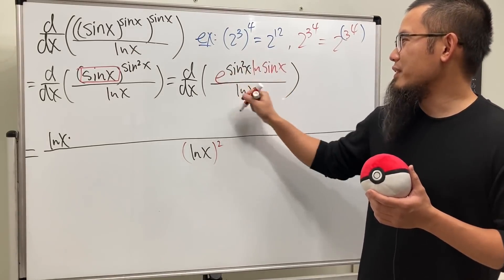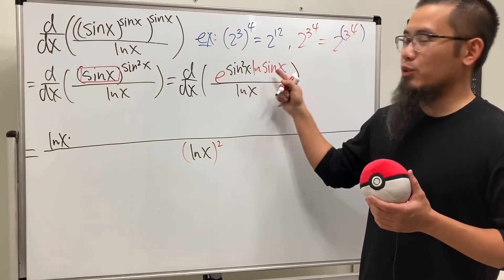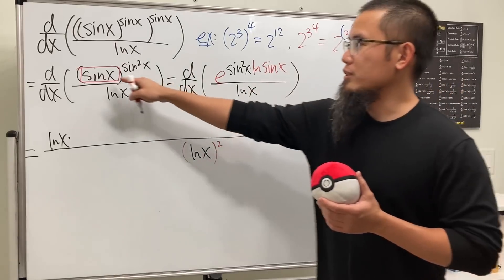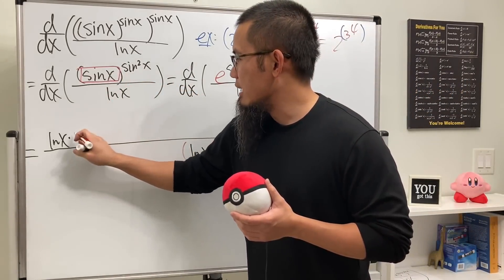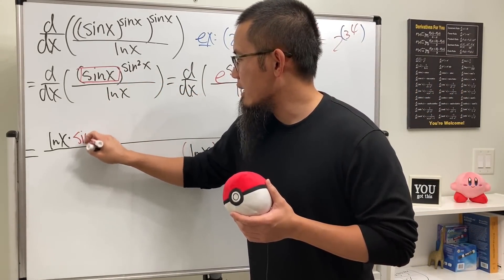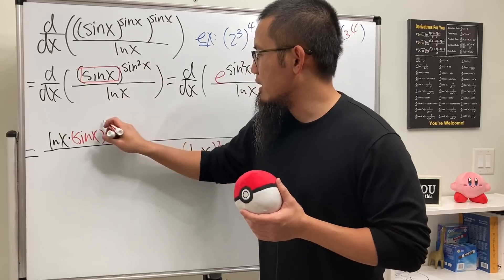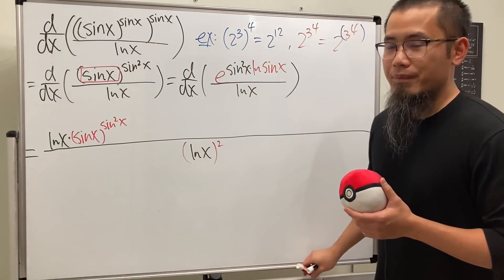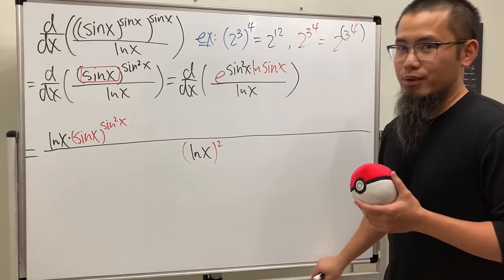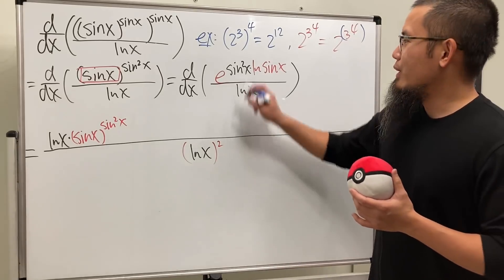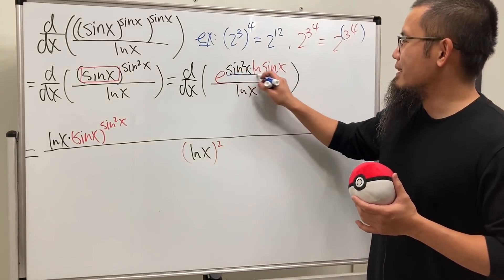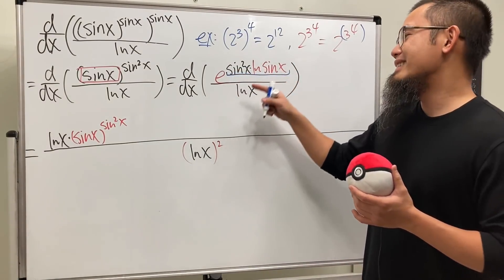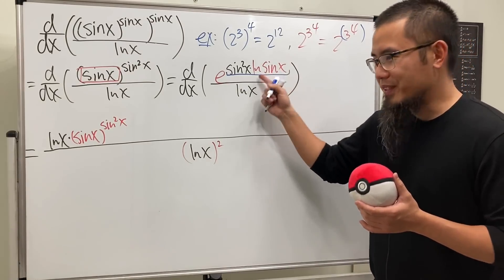For the derivative of the top: e raised to a power, differentiated, just brings down the same expression. So we write sin(x) raised to the sin²(x) power — that's the 'e to that power stays the same' part. Then we apply the chain rule and multiply by the derivative of the exponent.